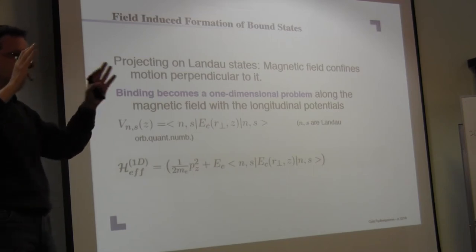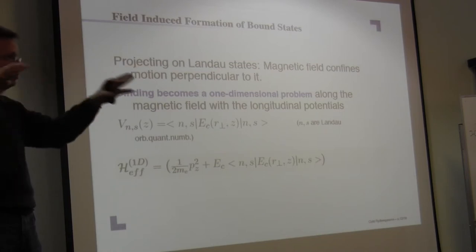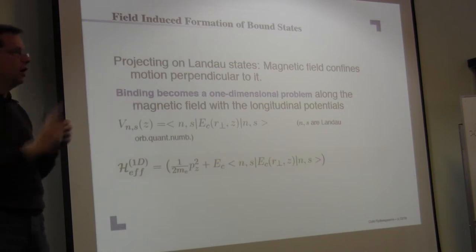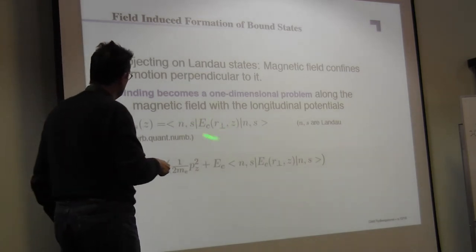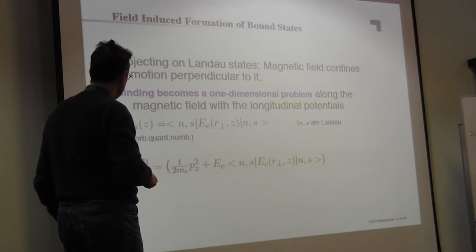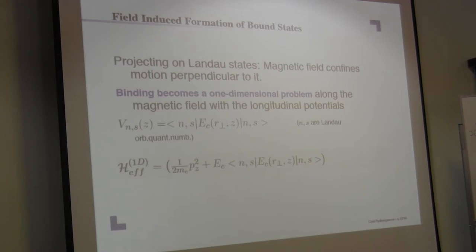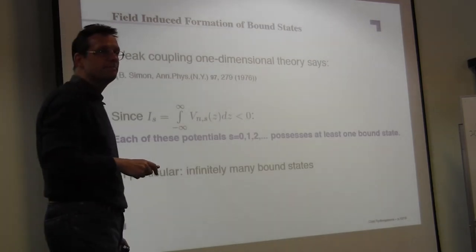So what I may picture is transversal to the magnetic field. I have Landau orbitals to the dominance of the magnetic field. Along, I do have the projection of these polarization potential onto these states. Then I get an effective potential along. Now it turns out that this effective potential, which is now in the equation of motion for the Z direction, that this does bind indeed.